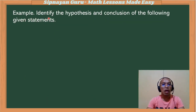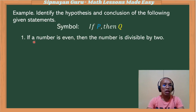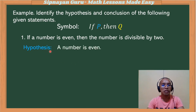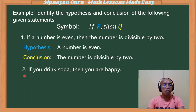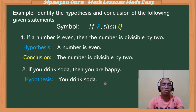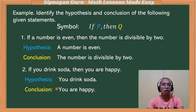Let's have an example. Identify the hypothesis and conclusion of the following statements. Suppose we have: 'If a number is even, then the number is divisible by two.' The hypothesis follows after 'if,' so 'a number is even' is our hypothesis. The conclusion follows after 'then,' so 'the number is divisible by two' is our conclusion. Sample number two: 'If you drink soda, then you are happy.' Hypothesis: you drink soda. Conclusion: you are happy.